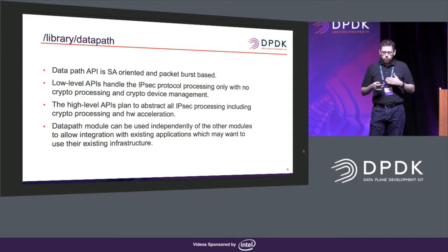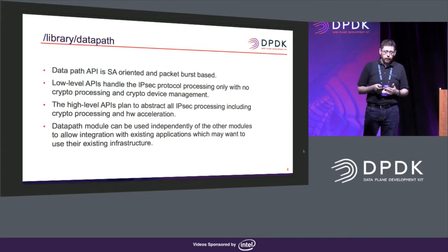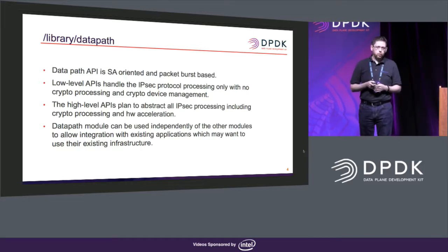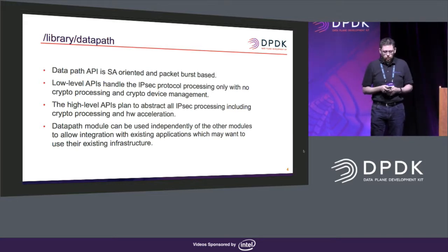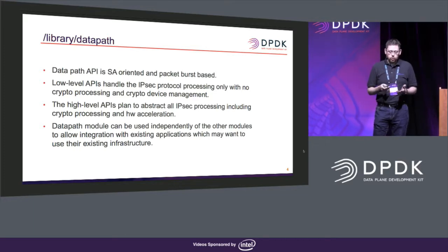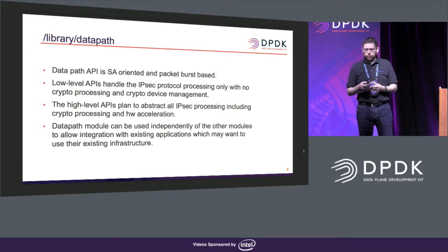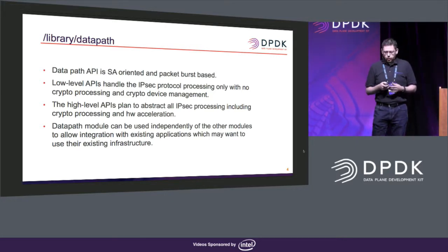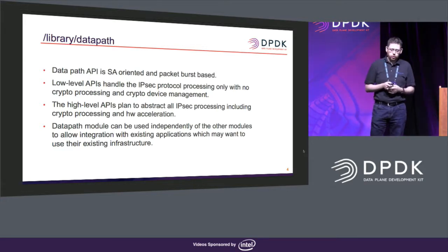Once we've achieved that, we plan to enable a higher-level API that abstracts all of the crypto processing model away from the user — so you can just say these are my packets for this SA and they get processed on a particular core. One of the key things is that we want the data path module to be independent of the database implementations, so you could use existing classification tables in an application for implementing security policy database lookups.